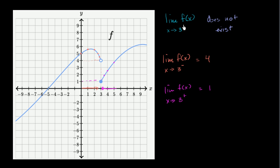The only way that this would have existed is if we got the same value for both of these. And then the limit would be that value. But we're clearly not getting the same value.